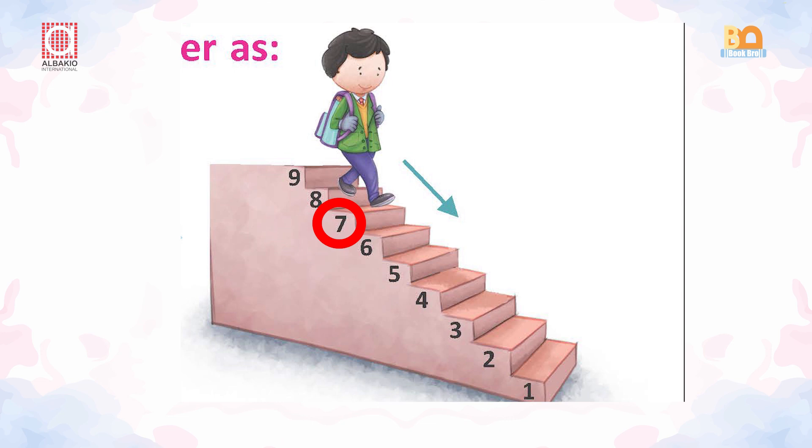9, 8, 7, 6, 5, 4, 3, 2, 1. It means that numbers are decreasing.